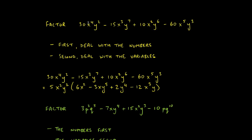The reason we use the lowest exponent is fairness: the first term can share four x's, the second can share three, the third can only share two, and the fourth can share five. Since contribution is mandatory from every term, we can't ask any term to give up more than its minimum. The same logic applies to the y's, where the minimum is 2.